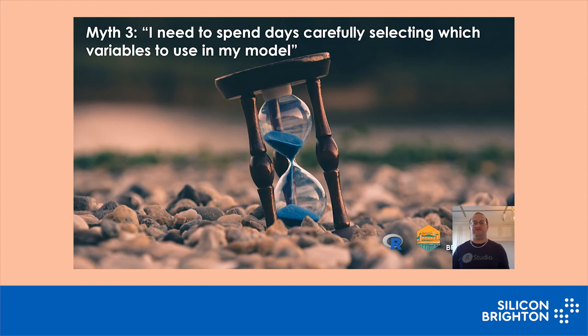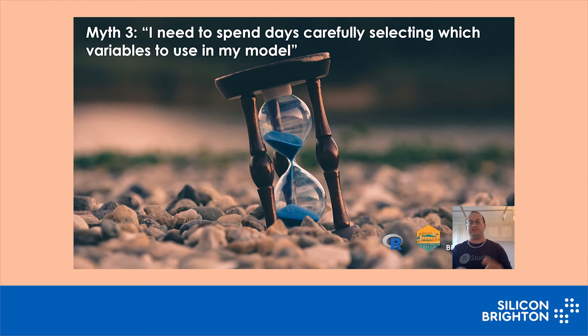The next myth is variable selection. Your CRM might have 200 pieces of information — 200 attributes on each customer — and you might think, where do I start? What am I going to put into the model? With machine learning, you don't have to spend time carefully choosing the 10 or 20 most important variables. Put it all in, because machine learning will ignore the variables that don't have any predictive quality. Sure, later on you can start experimenting and dropping variables in and out, but at the start, when you're trying to get a model off the ground, that's the last thing you want to be doing.